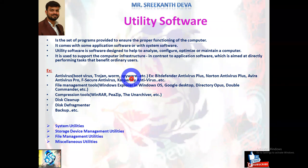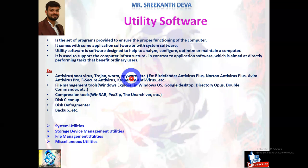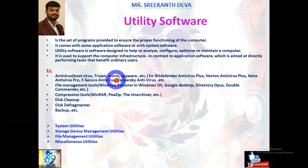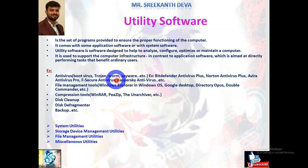FAT viruses attack the file allocation table, which is a vital part of normal computer functioning. This type of virus can be especially dangerous by preventing access to certain sections of the disk where important files are stored, resulting in information losses from individual files or even entire directories. Worms are programs very similar to viruses with the ability to self-replicate and can lead to negative effects on your system. They are detected and eliminated by antivirus software.